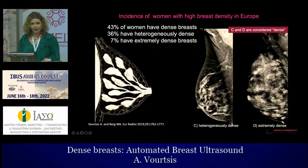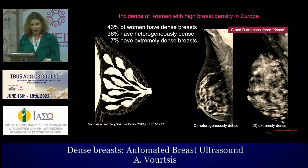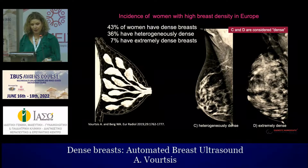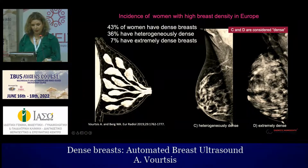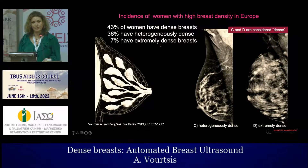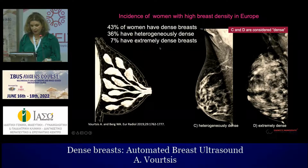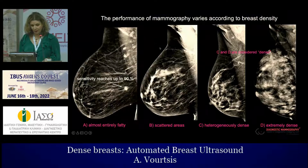How often does this occur? It is very often — it is an absolutely normal situation. About 43% of women in Europe have dense breasts. Among this number, 36% have heterogeneously dense breasts, and about 7% have extremely dense breasts.